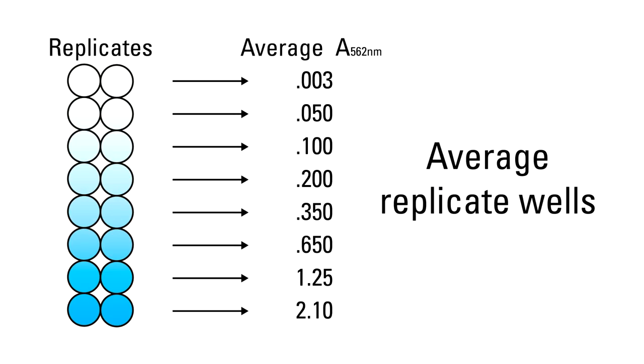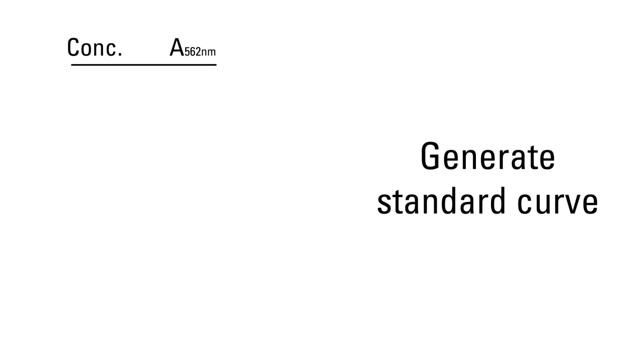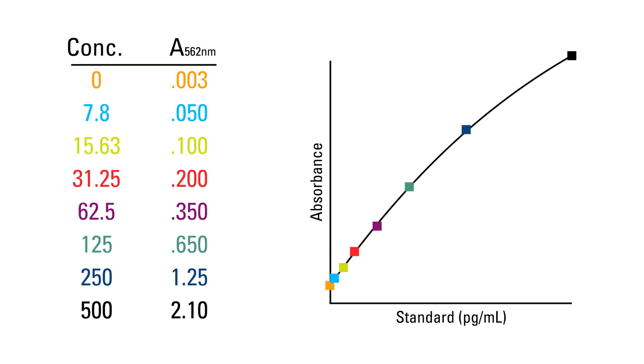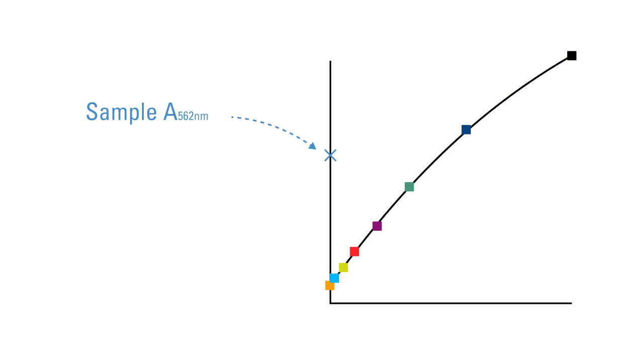Average all replicate values, and generate a standard curve by plotting the mean standard values versus their respective concentrations. Then use the standard curve to interpolate the concentration of each sample based on its mean absorbance value.